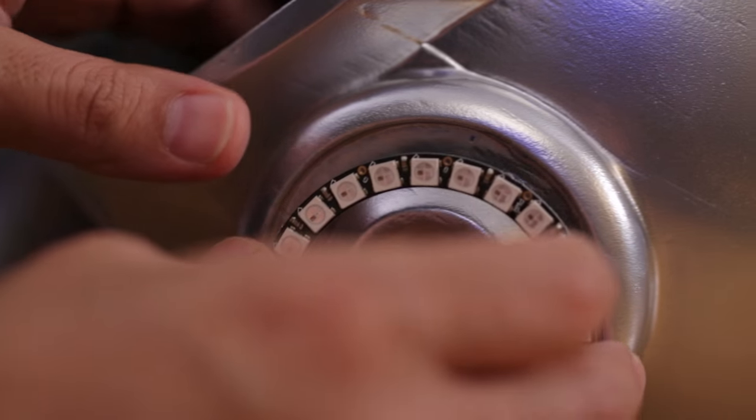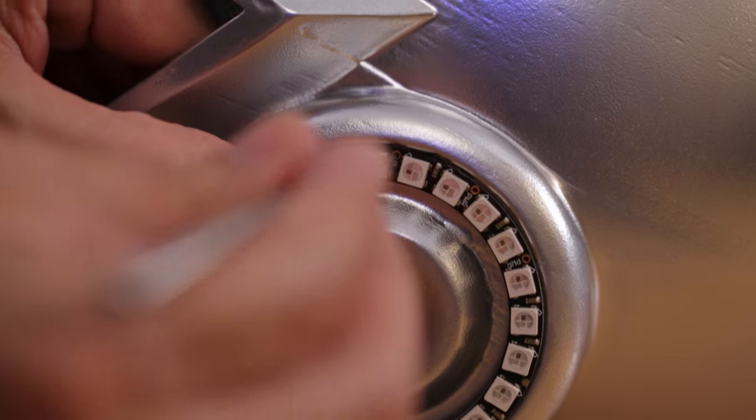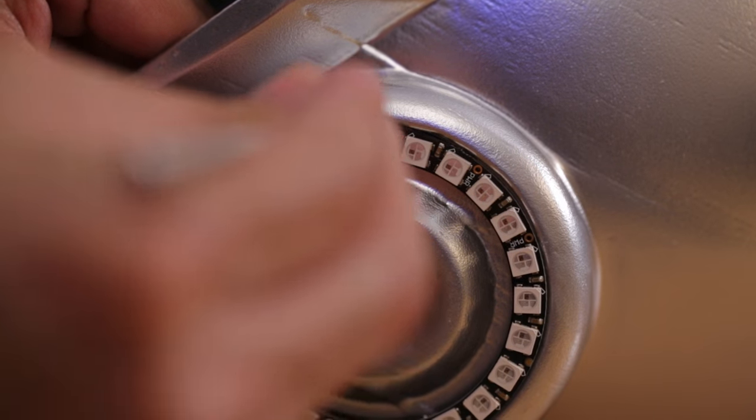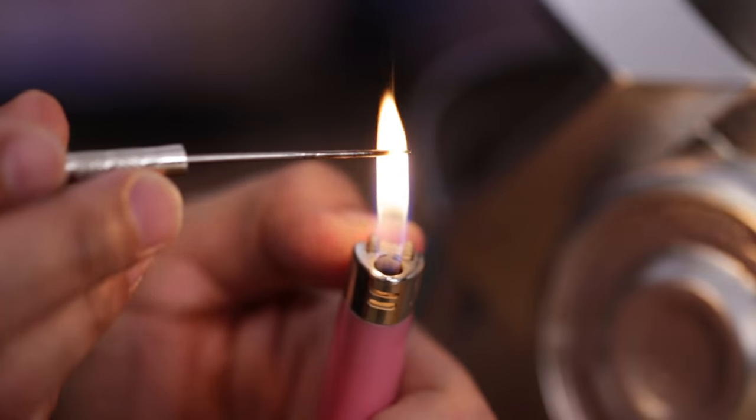Next up we're going to need a couple of holes in the ears for each wire so we'll use a sharp pointy thing to mark our points and then we'll heat up the tip so that we can easily poke through the helmet.